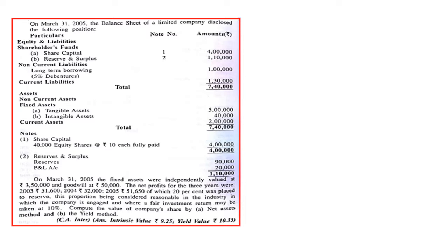On the asset side, we have non-current assets under fixed assets — tangible assets and intangible assets. Then we have current assets. The summation of assets is also 7 lakh 40,000. This is the basic information regarding the balance sheet, including the notes.